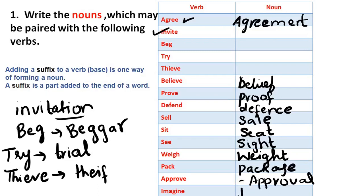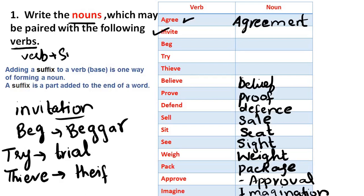And at the end, we have 'imagine,' which will convert to 'imagination.' I hope you will understand. If there is any confusion, you can ask. When we convert a verb to a noun, we add suffixes — this is just one way to convert a verb to a noun.